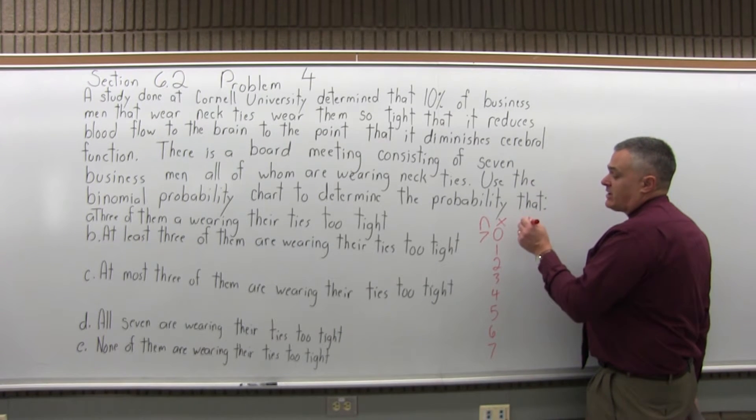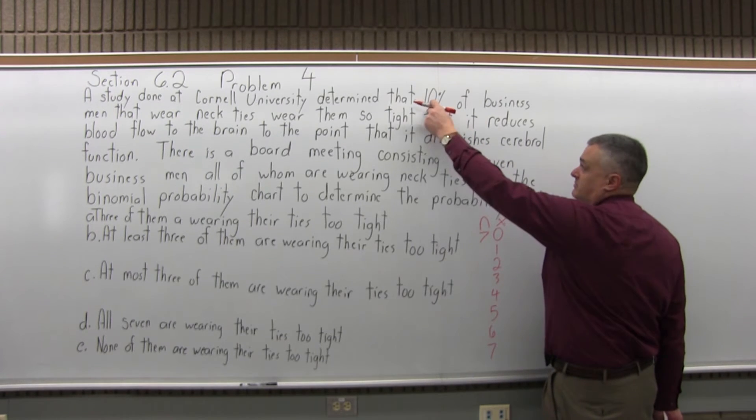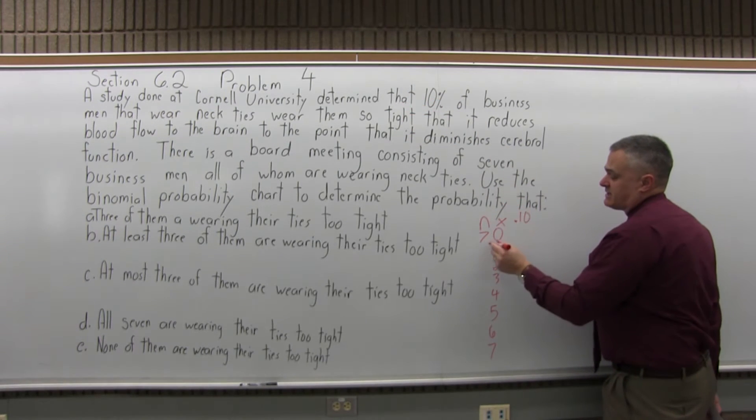And there's many columns, we want the .10 column because the problem says 10%, which is, as a decimal, .10.